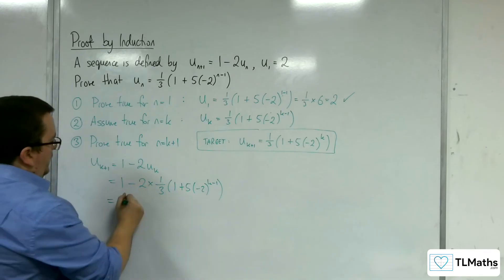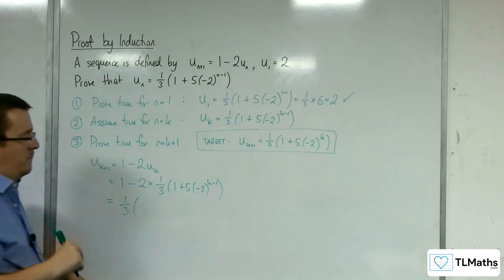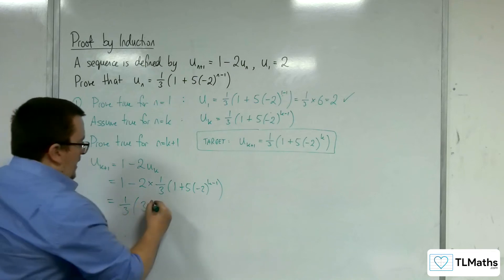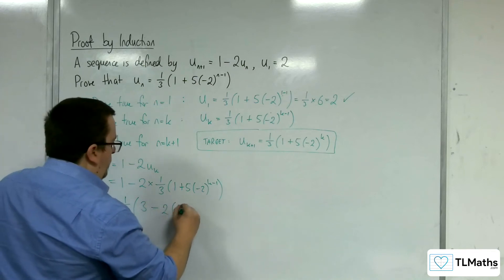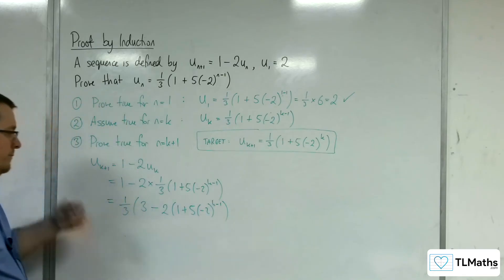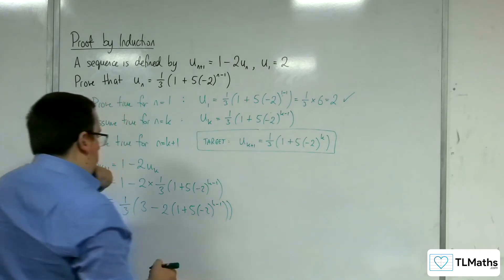I need the one third factor out. So could I bring one third out as a factor at the start? That would probably be a better shout, because I know that one third times 3 will make 1. And I'm going to have to take away 2 lots of the 1 plus 5 minus 2 to the k minus 1, with this extra bracket there.